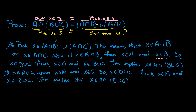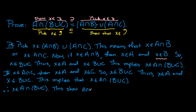So what have we shown? If you pick an X from the right-hand side, you either get X in A intersect B or A intersect C. In either scenario, X is an element of A intersect (B union C). Since X was arbitrary, this shows that (A intersect B) union (A intersect C) is contained in A intersect (B union C). We've now shown subset containment in both directions, and we conclude that we have proved the set equality.